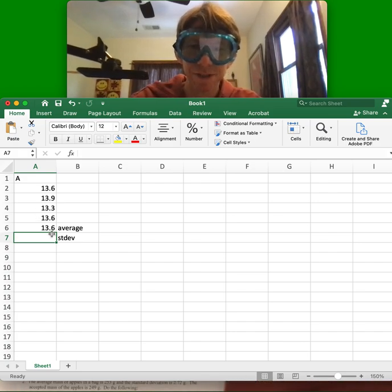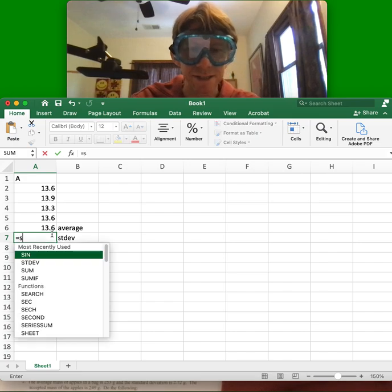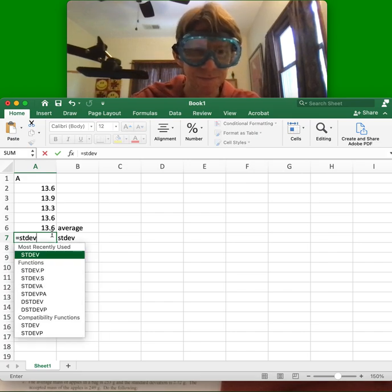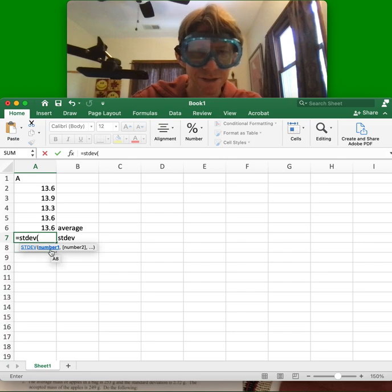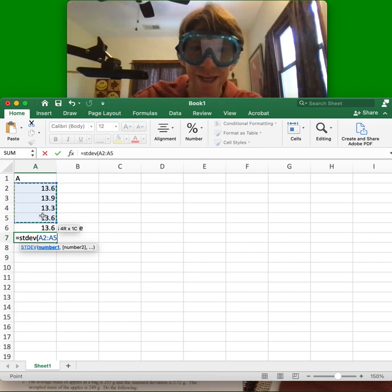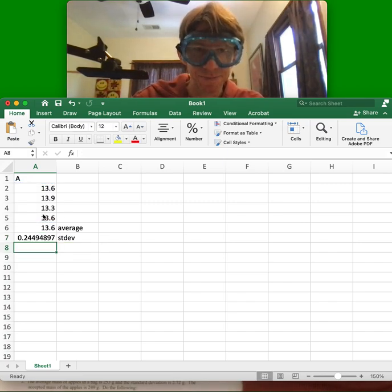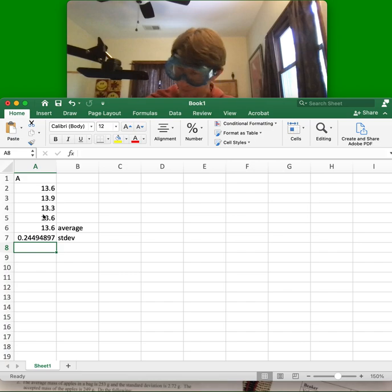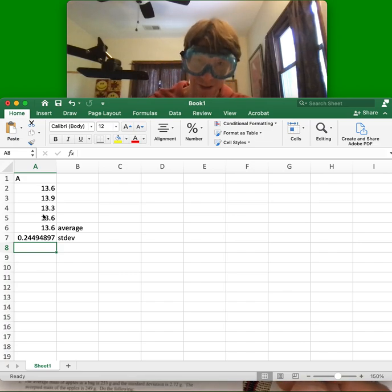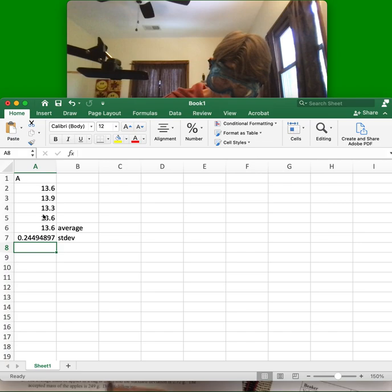And the last thing I need to do is close the parentheses and hit return. And it tells me exactly what the average is, 13.6. So I'm going to write that down. Well, I'll show you in a minute that I write that down. For standard deviation, it's going to be equals STDEV. Open a parentheses. And then it's looking for numbers to take the standard deviation up.